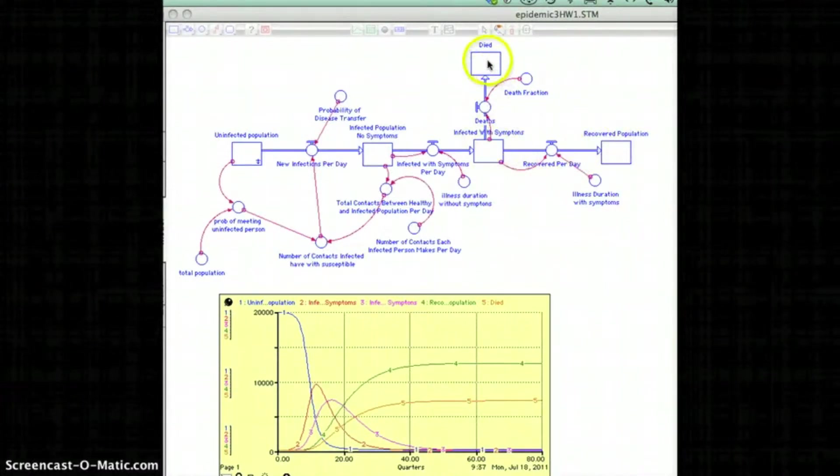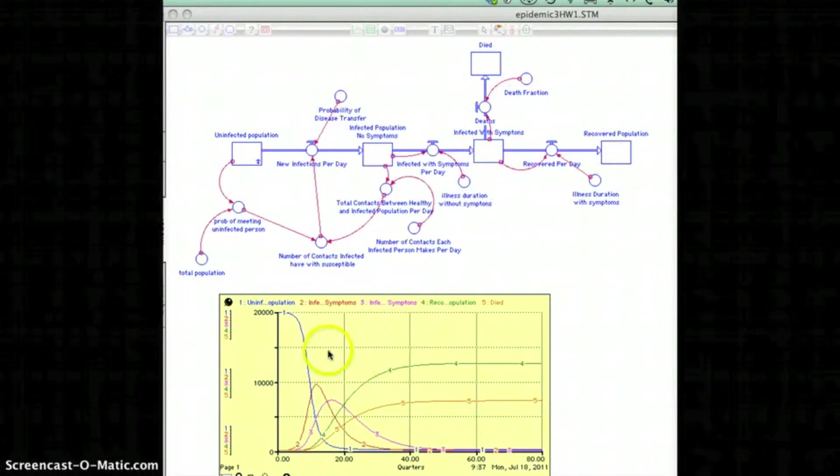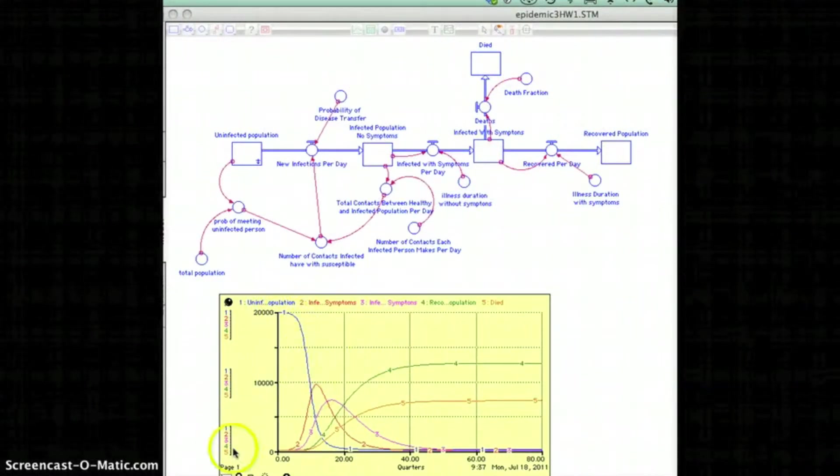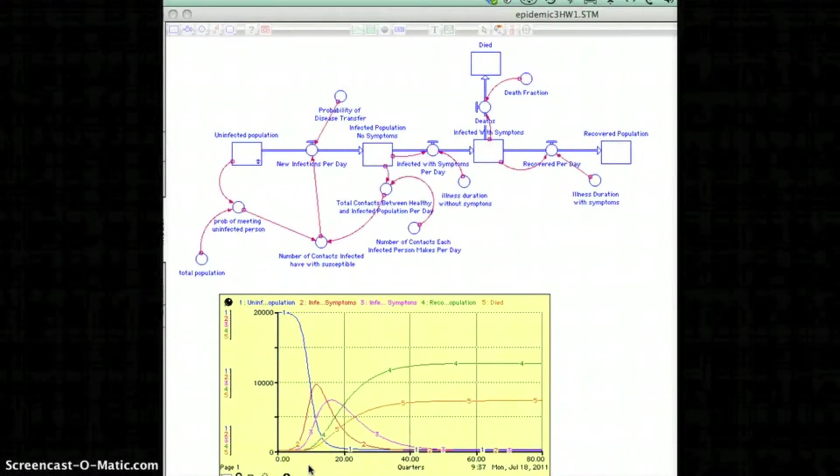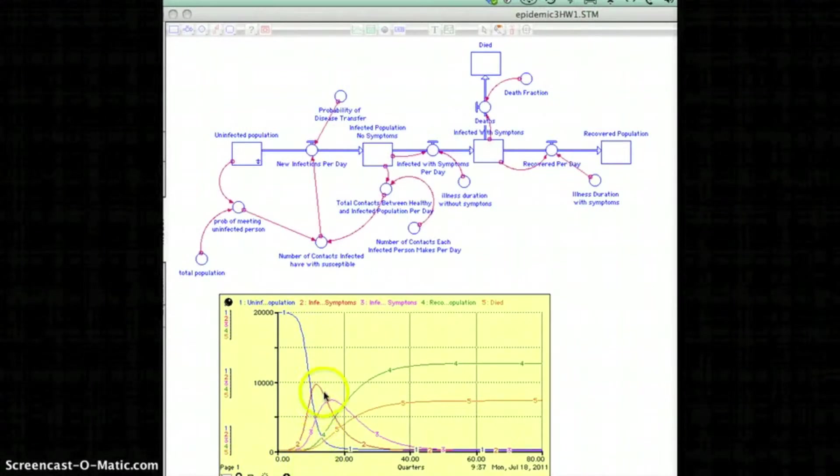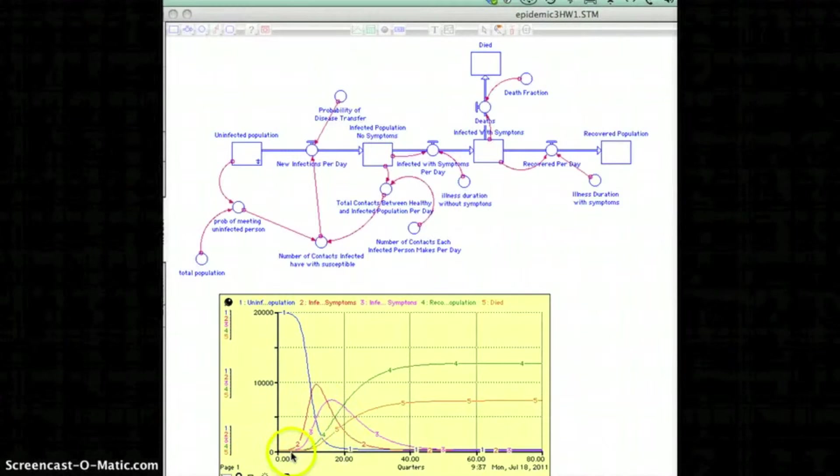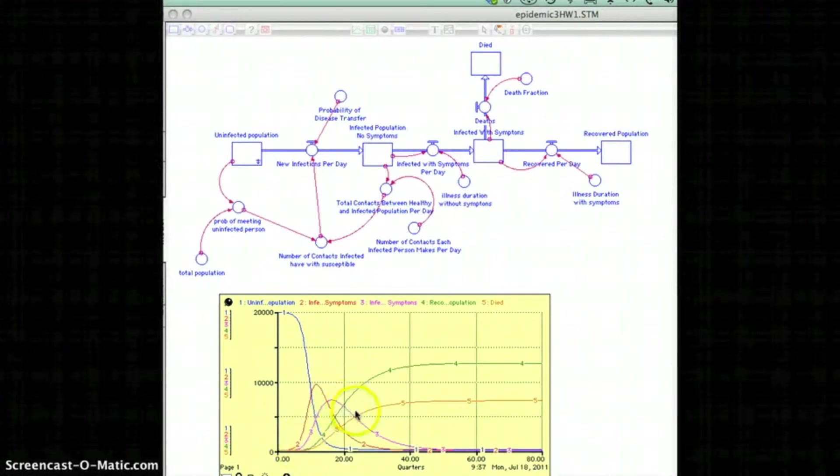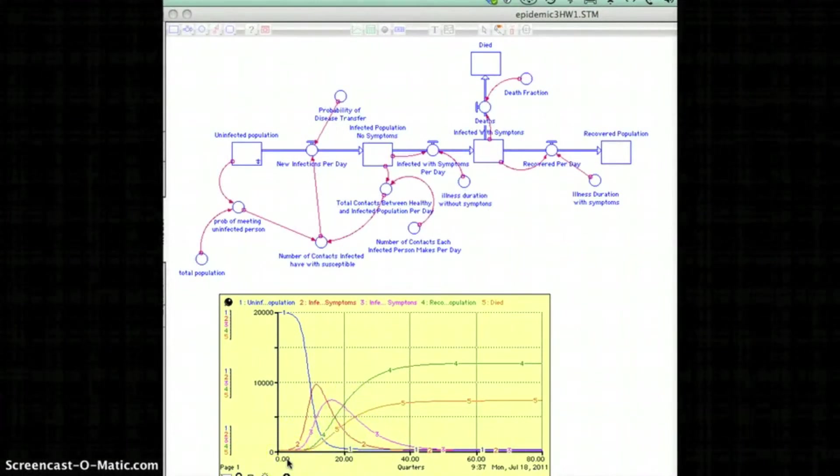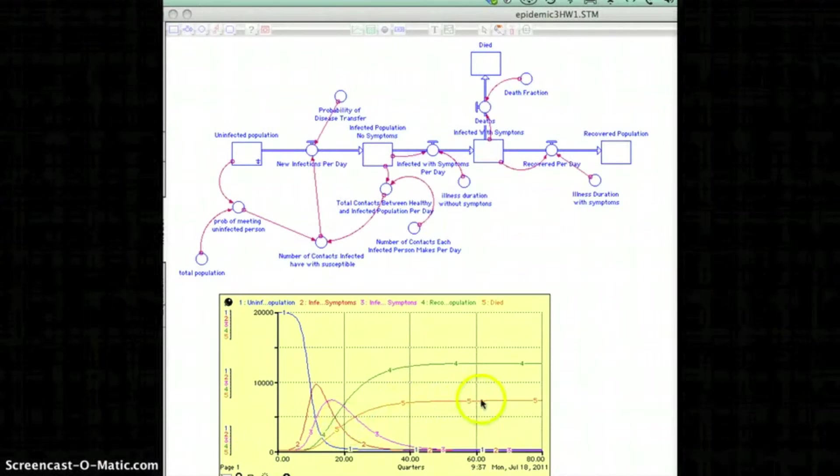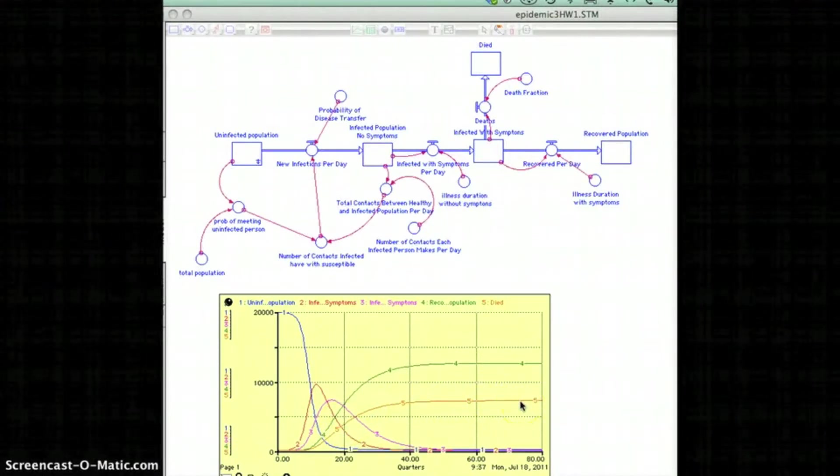So here, number one, the blue, is the original population. Number two is the infected population with no symptoms. Number three is the infected population with symptoms. Number four is the recovered population, and number five is the population that died.